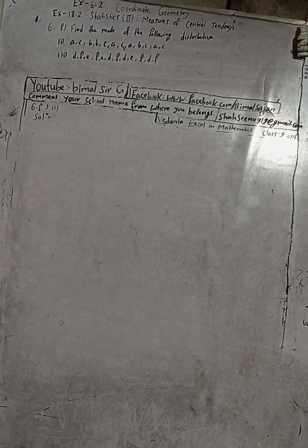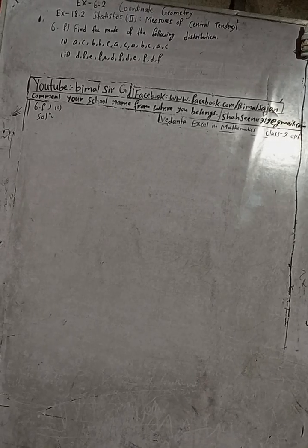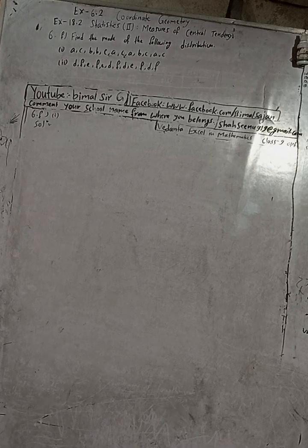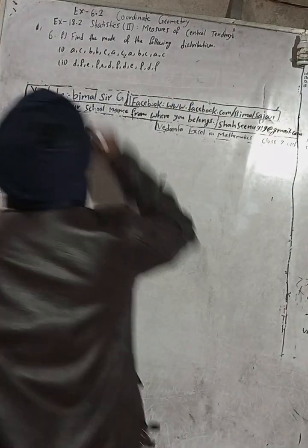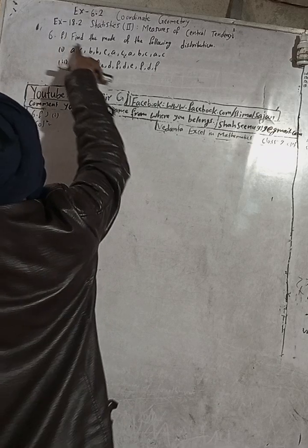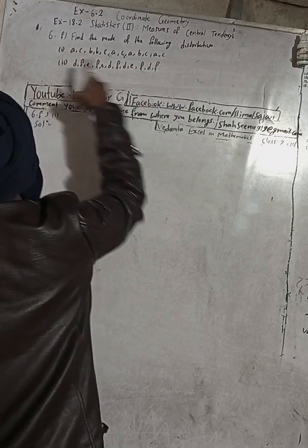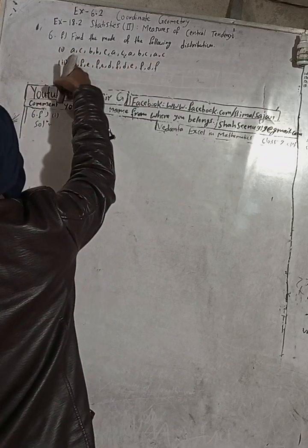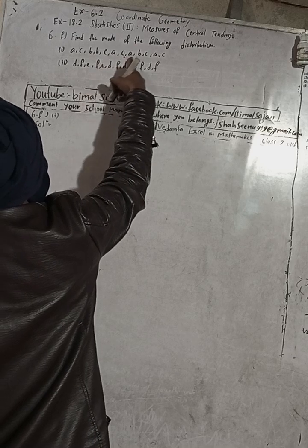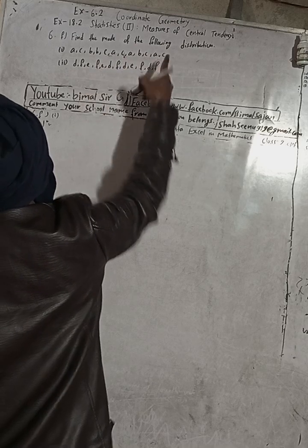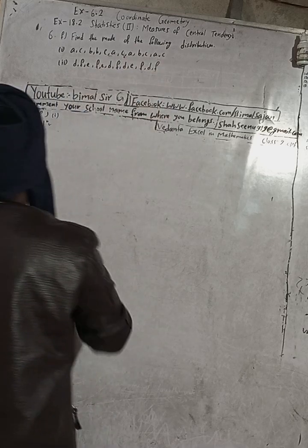This is question number 6F. Find the mode of the given distribution. The data is: A, C, B, B, C, A, C, A, B, C, A, C, A, B, C, A, C. We will first arrange the data.